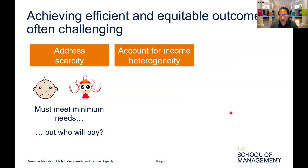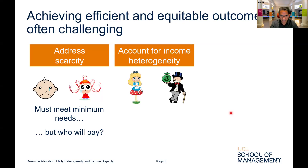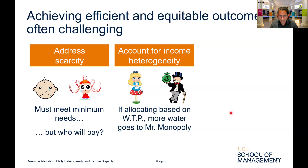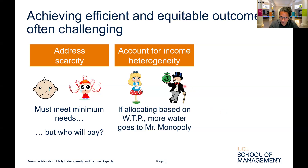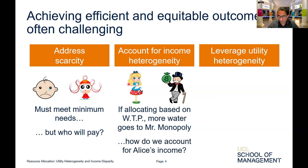Second, we need to account for income heterogeneity. We can observe and screen based on income, but if we allocated ignoring income heterogeneity, we'd just end up allocating based on willingness to pay — which means somebody like Mr. Monopoly, who's rich, would receive much more water than Alice, simply because he's willing to pay more.